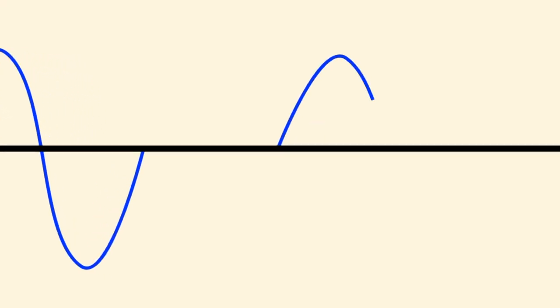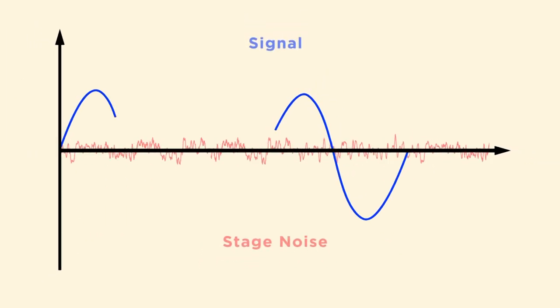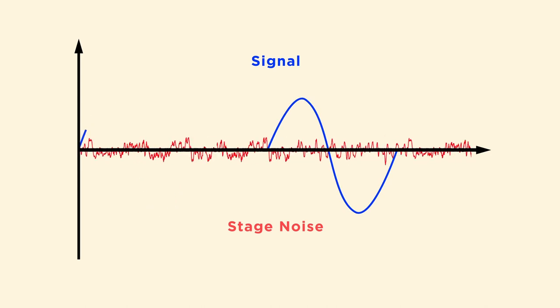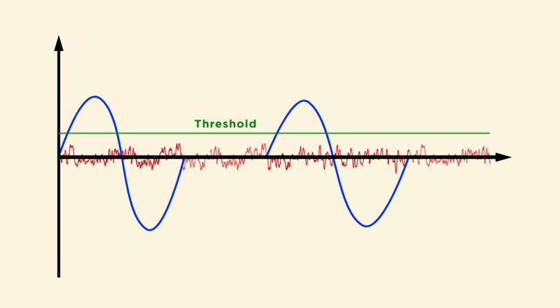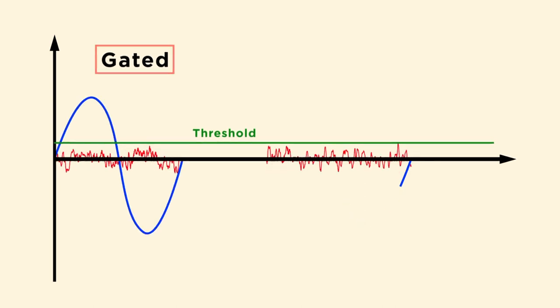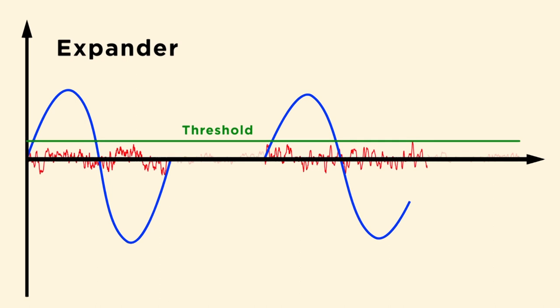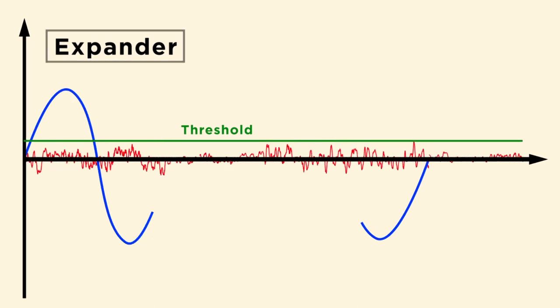So what is an expander? Expanders belong to the gate family of audio processing tools. A gate is a tool that basically mutes the audio whenever the audio level drops below a threshold. An expander, on the other hand, lowers the audio level by a predetermined amount instead of muting the audio completely. It's like riding the fader and lowering the level between musical phrases to minimize stage bleed or reduce sensitivity to feedback.